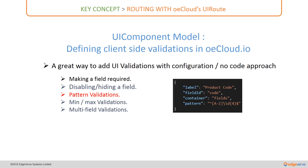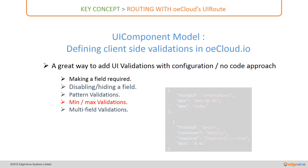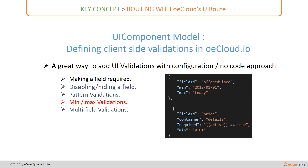It is possible to implement min and max validations — for example, requiring an 'offered since' date to be on or after 1st January 2012, and not after the current date. Similarly, you can define a minimum value for 'price' to be 0.01, as shown in the code.